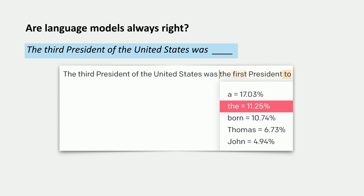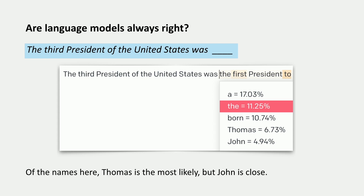"The third president of the United States was blank." If we feed this into GPT-3, which is the predecessor system of ChatGPT, we see that there are a bunch of probabilities over next words. Thomas is actually the most likely name for the next word. It's reassuring that it's more likely to generate Thomas Jefferson than any other name, but you can see that John has pretty decent probability as well — 4.9% compared to Thomas at 6.7%.